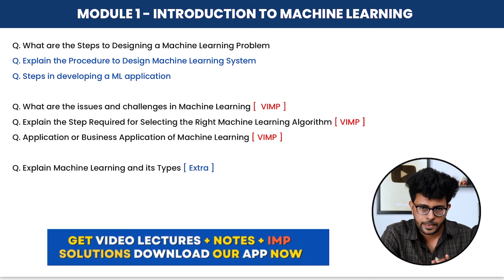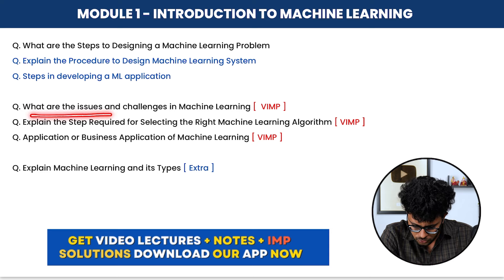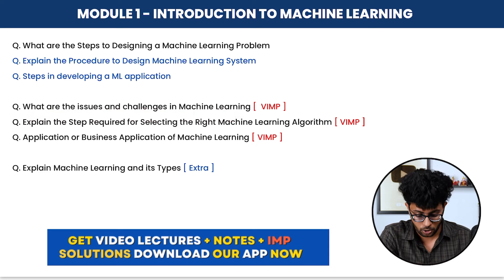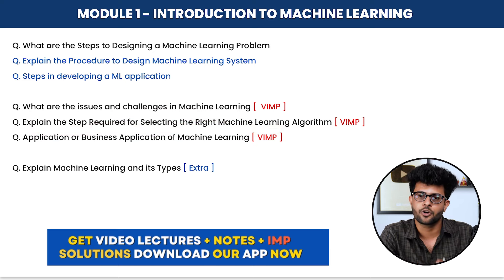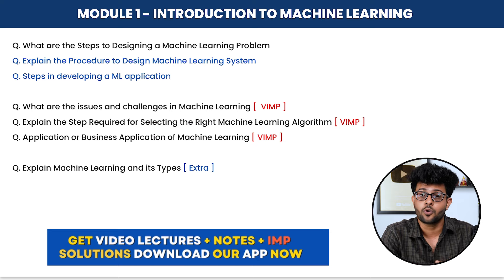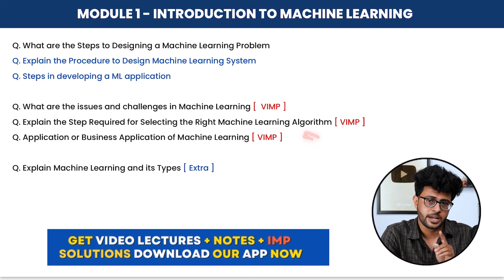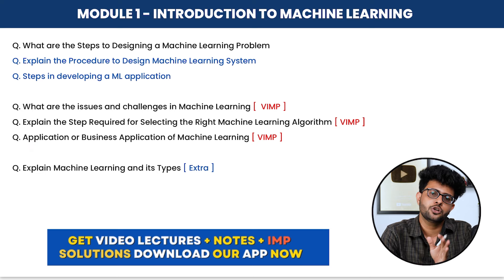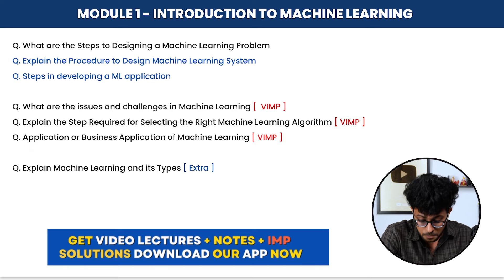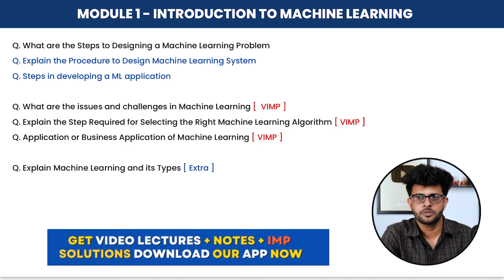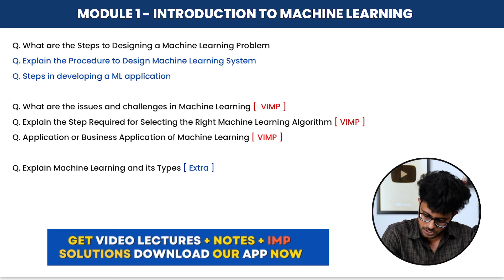Issues and challenges in machine learning is very important and recently asked frequently. Also important: explain the steps required for selecting the right machine learning algorithm. Understanding which steps are involved here is key. Another question is the application of machine learning — business applications of machine learning, machine learning in healthcare, education, the IT sector, and the business sector. You should know these applications.